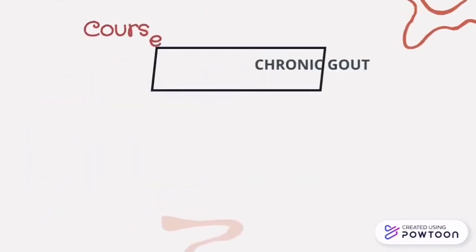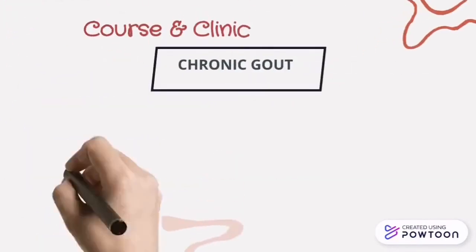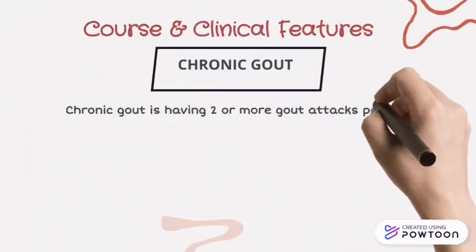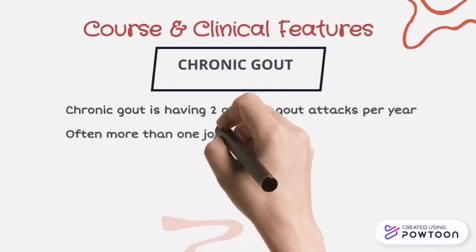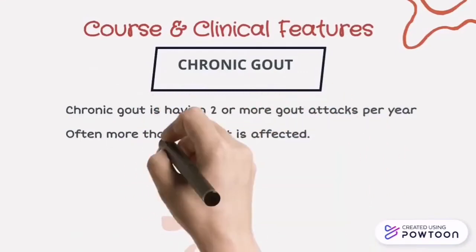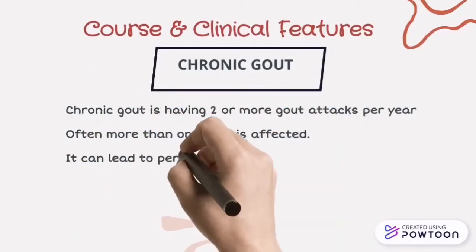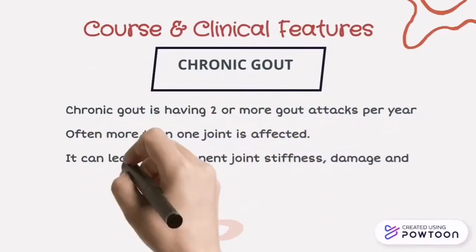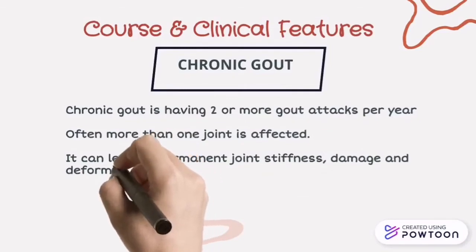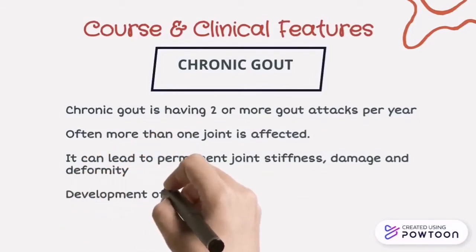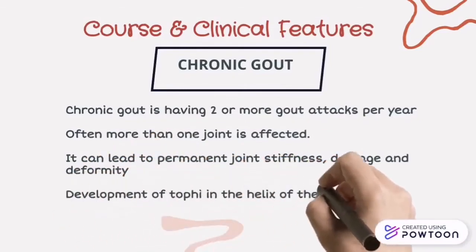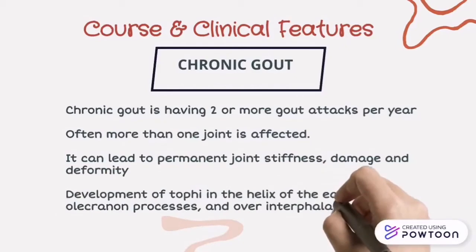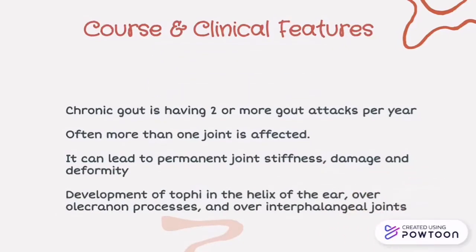For chronic gout, it is defined as having two or more gout attacks per year, with often more than one joint affected. It can lead to permanent joint stiffness, damage, and deformity, as well as development of tophi in the helix of the ear, olecranon process, and over interphalangeal joints.